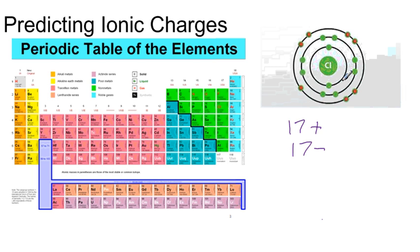Again, it's an atom. So that means the number of protons equals the number of electrons. When chlorine forms an ion, it gains an additional electron. When it does this, it also gains an overall charge.